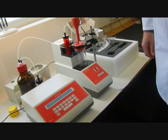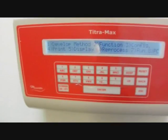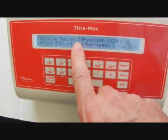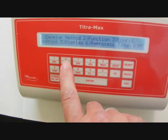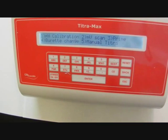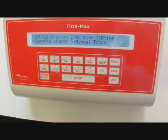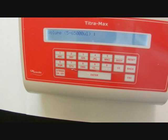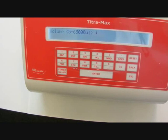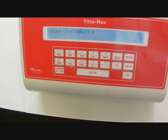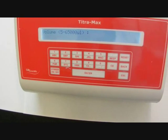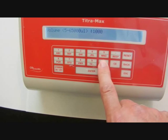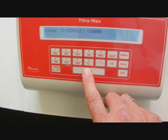We're going to turn on the unit now. This is the main menu. We need to select function which is number 2 and prime because we're going to prime the unit. Priming the unit ensures that the titrant fills all the tube and the burette leaving no air bubbles. To start with we'll select 10,000 microliters which is 10ml which is the size of the full burette.